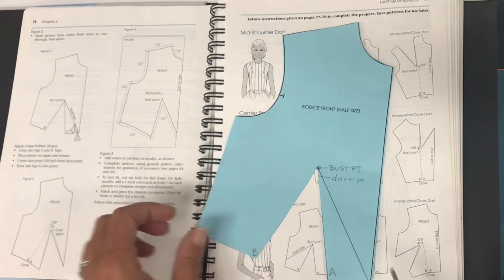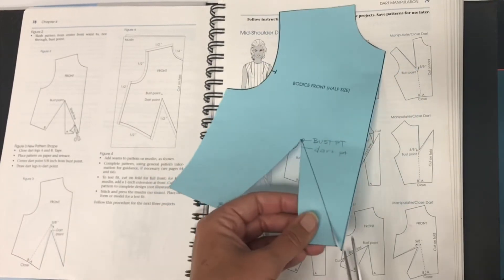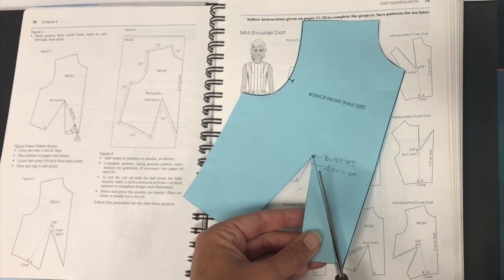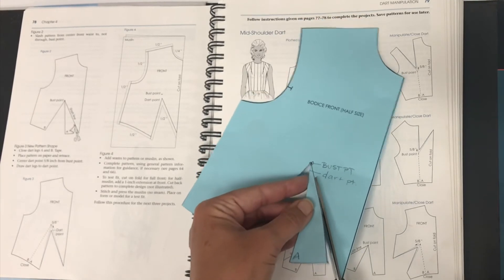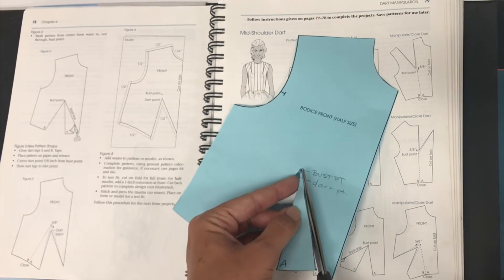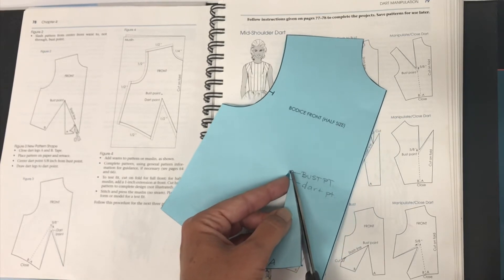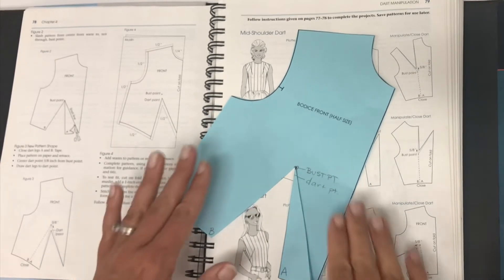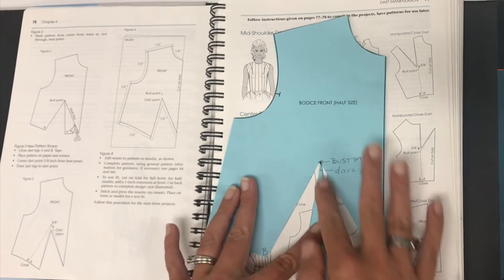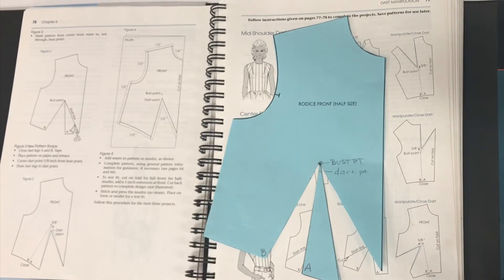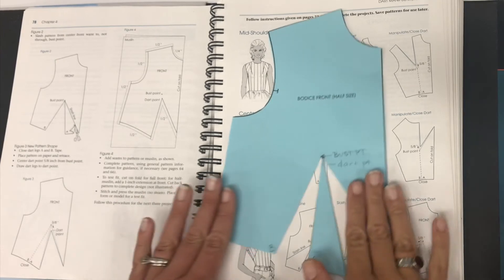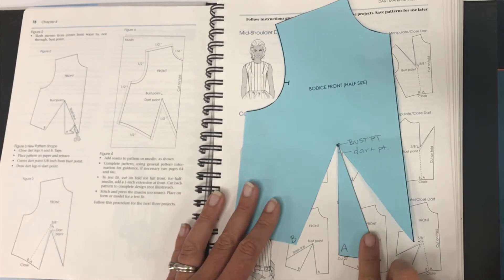Okay, I'm ready to slash, back in business. So here I go. I'm slashing my slash line. I'm going up to but not through the little dot. So hopefully I cut close enough that this is still connected. If it's not, just tape it back. Okay, so that's figure two.